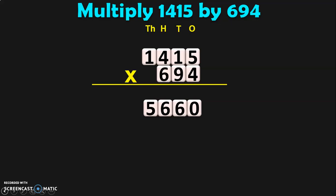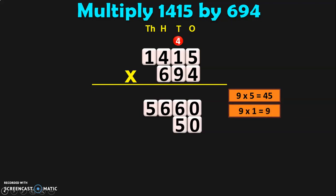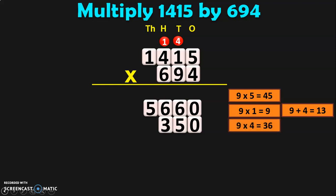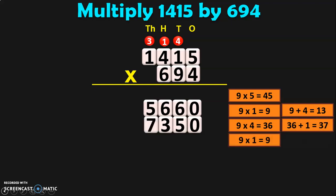The next step is to multiply 1415 by 90, because 9 is in the 10s place. Add a 0 in the 1s place and begin multiplication by 9. 9 into 5 is 45 — 5, carry over 4. 9 into 1 is 9, plus 4 is 13 — 3, carry over 1. 9 fours are 36, plus 1 is 37 — 7, carry over 3. Next, 9 into 1 is 9, and 9 plus 3 is 12. So the 2 will be written in the 10,000s place and the 1 will be written in the lakhs place.